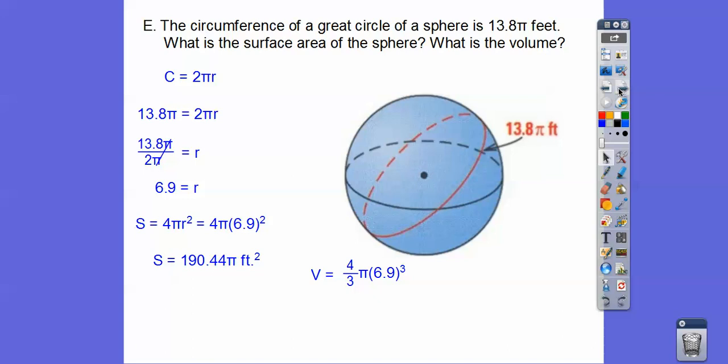And then volume is 4/3 πr³, and so when we cube that, and then multiply it by 4, divide it by 3, we get 438.012π ft³. And I did not convert that all to a decimal.